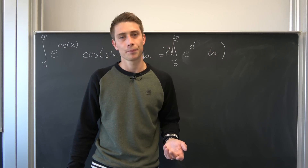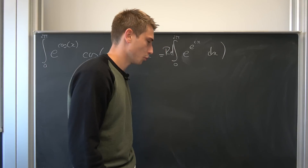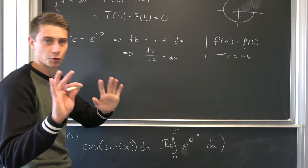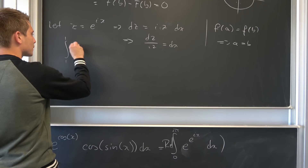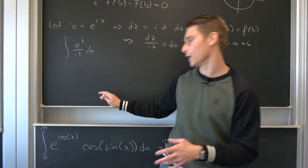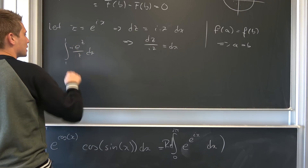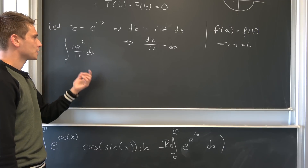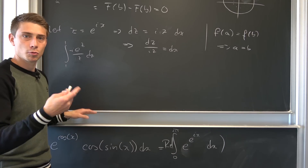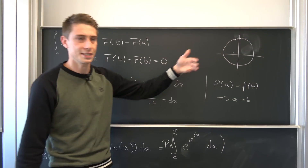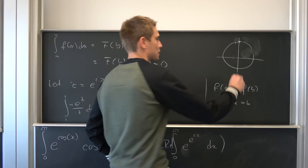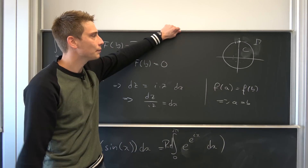We are integrating from one to one — e to the z over i times z with respect to z. Advancing the fraction by i over i, we get our integrand. We want f of z to equal this integrand, and our contour is the unit circle — the closed one. Since we integrate from one to one, we are not passing through the singularity at zero, so we don't need a branch cut. This makes things much easier.